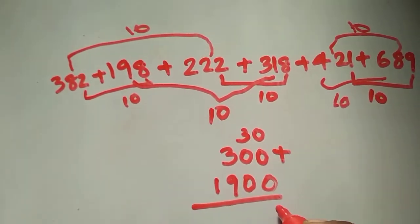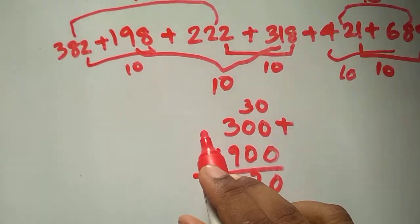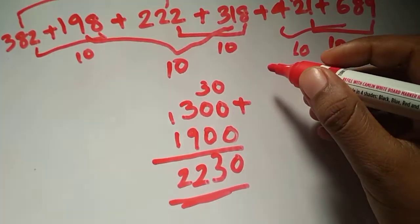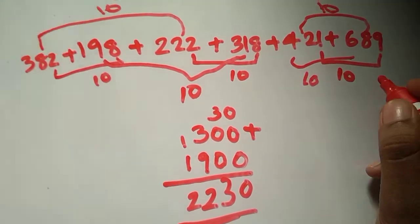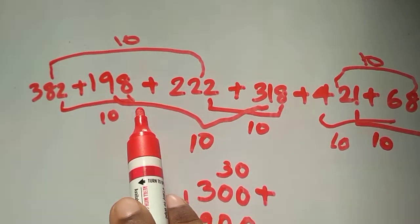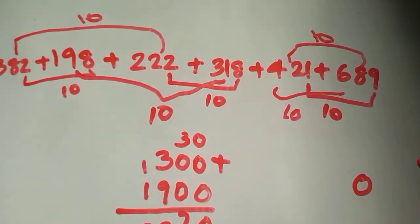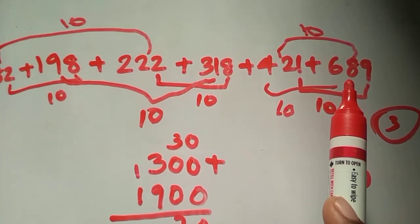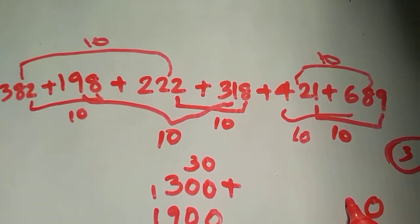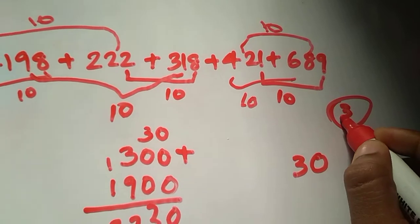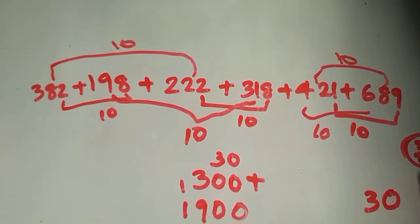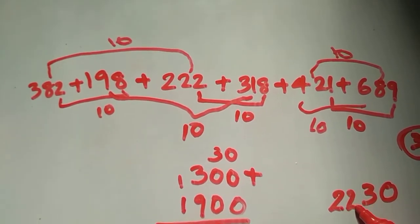Adding 30, 300, and 1900 together: 0 in the 1's place, 3 in the 10's place, 9 plus 3 is 22 — carrying gives us the final answer of 2230. For speed practice: 9 plus 1 is 10, 20, 30 — write 0 and carry 3. Then 8 and 2 gives 10, 20, 30 — write 3 with the carried 3. Then 10 plus 3 is 13, plus 2 is 15, plus 1 is 16, plus 3 is 19, plus 3 carried is 22. So the answer is 2230.